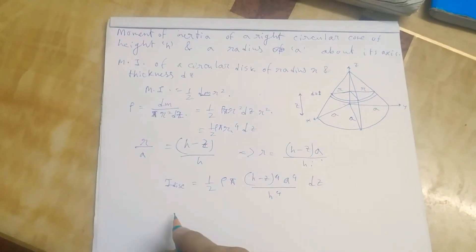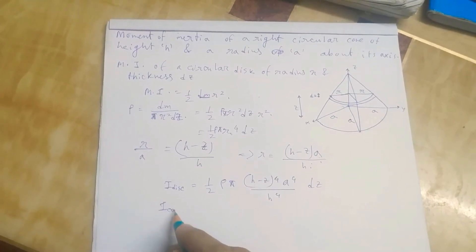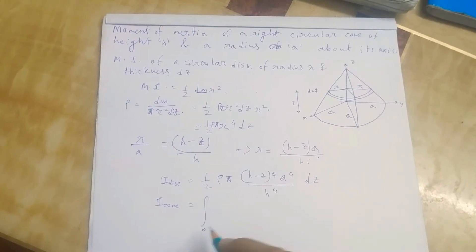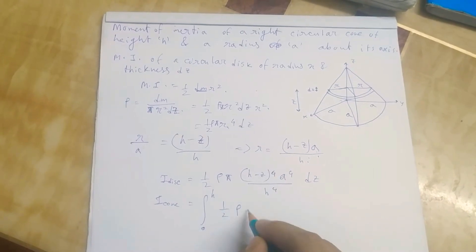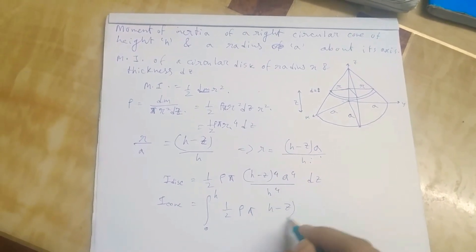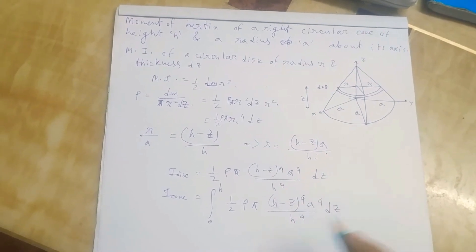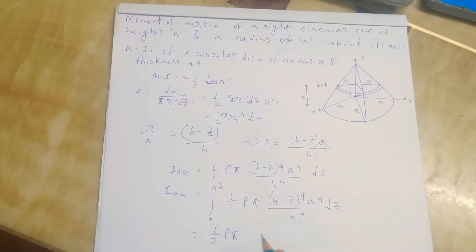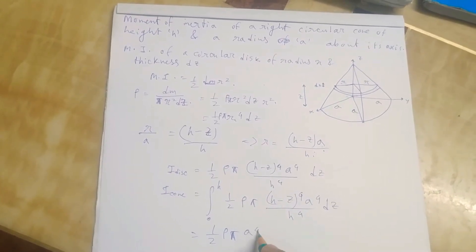We simply do that. The moment of inertia of the cone will be integration from 0 to h, the whole height, half rho pi (h minus z) to the 4, a to the 4 over h to the 4, dz. Now as everything else is constants, so we can write them outside the integral.